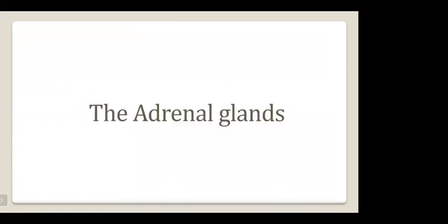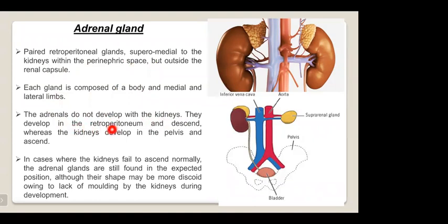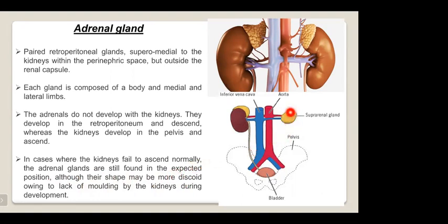The adrenal glands are paired retroperitoneal glands superior and medial to the kidneys, within the perinephric space but outside the renal capsule. Each gland is composed of a body and medial and lateral limbs. Importantly, the adrenals do not develop with the kidneys — they develop in the retroperitoneum and descend, whereas the kidneys ascend from the pelvis. In cases of ectopic kidney, the adrenal glands are still found in their expected position, although their shape may be more discoid due to lack of molding by the kidney.